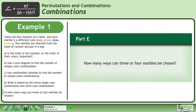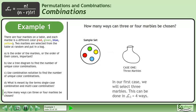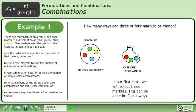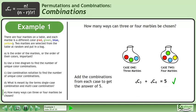In Part E, how many ways can three or four marbles be chosen? Set up the sample set with the four marbles. In our first case, we will select three marbles; this can be done in 4C3 equals four ways. In our second case, we will select four marbles; this can be done in 4C4 equals one way. Add the combinations from each case to get the answer of five.